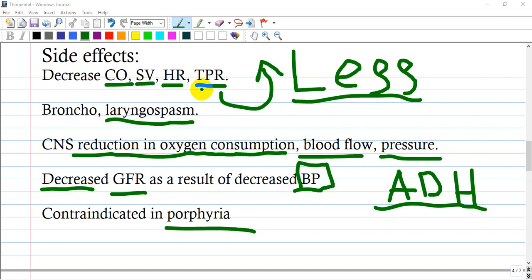The decrease in total peripheral resistance, heart rate, and cardiac output decreases the glomerular filtration rate as a result of decreased blood pressure. As a compensatory effect, antidiuretic hormone will increase and retain water. It is contraindicated in porphyria because it induces enzymes that produce porphyrins.